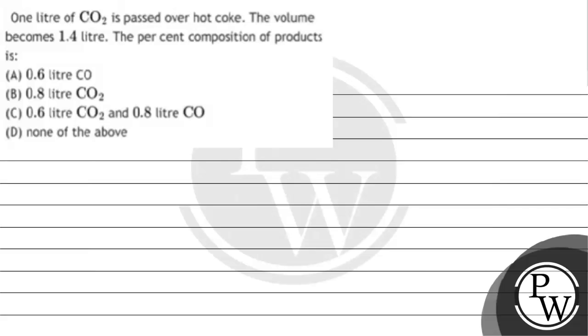Hello, let's read this question. The question says one liter of CO2 is passed over hot coke. The volume becomes 1.4 liters. The percentage composition of products is: option A is 0.6 liter of CO, option B is 0.8 liters of CO2, option C is 0.6 liters of CO2 and 0.8 liter of CO, option D none of the above.